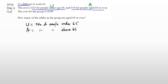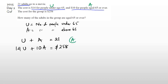We've got 21 people going to the movies, so U plus A equals 21. Then the second equation is $14 times the number of people under 65, plus $10 times the number of people over 65, all equal to $258. If you form one equation, you're looking at your basic achieved rate right there.